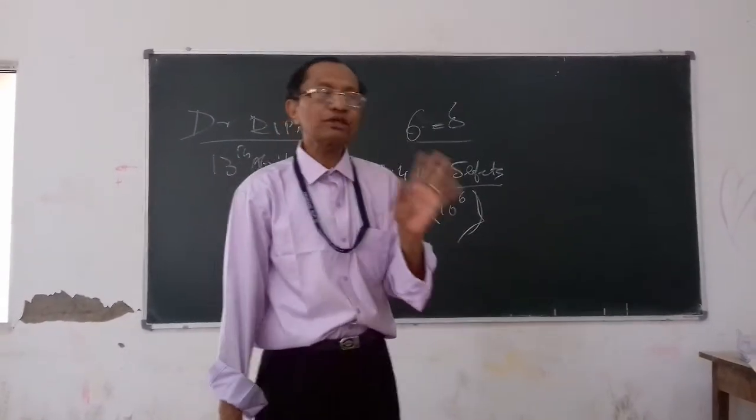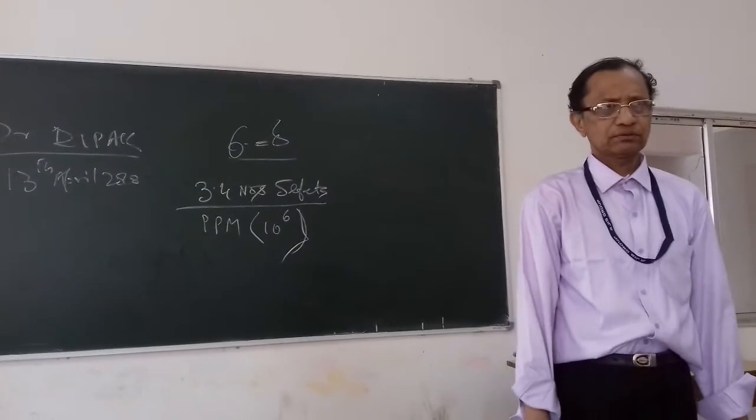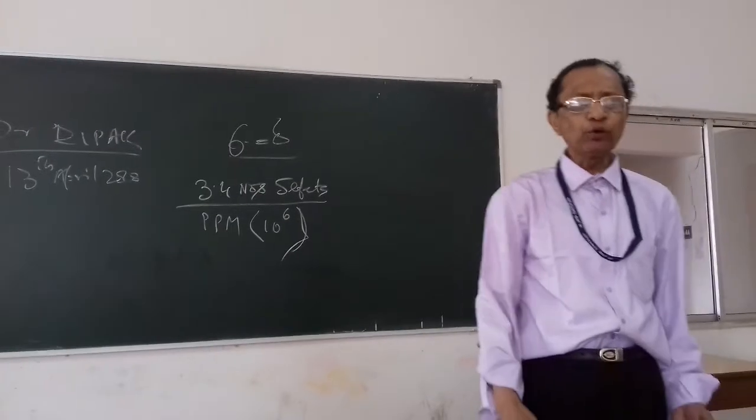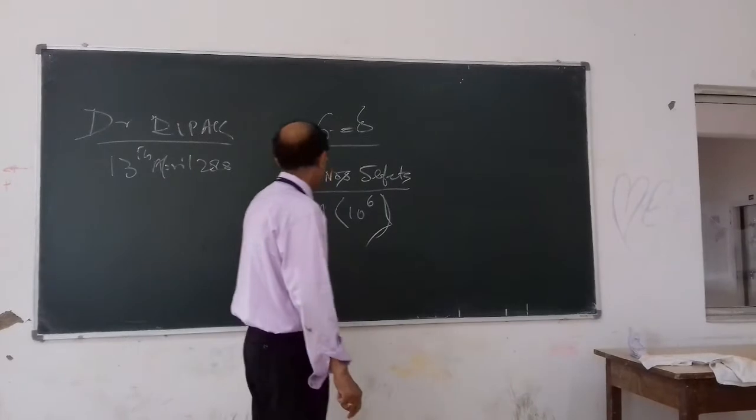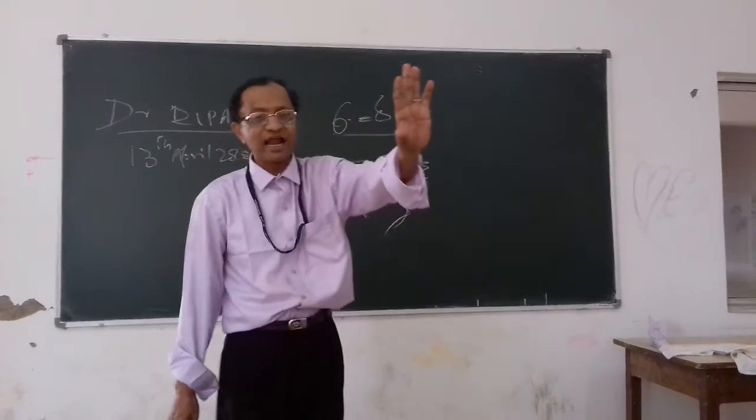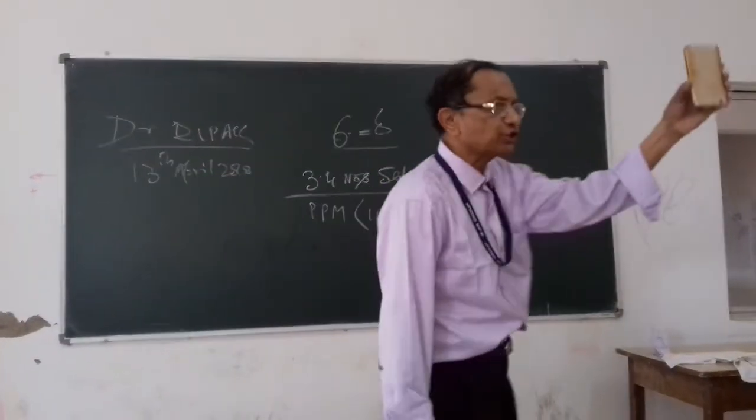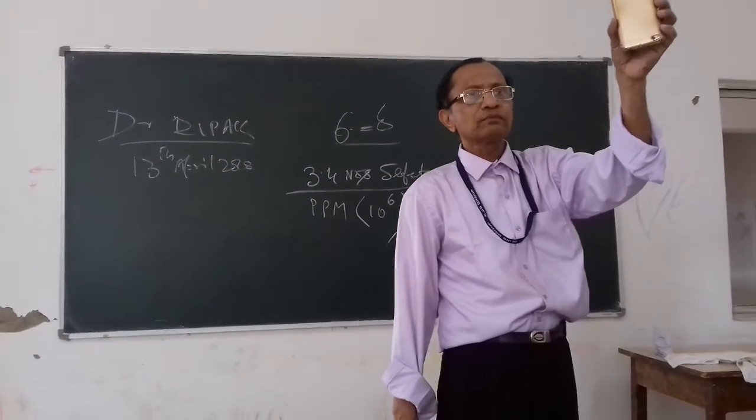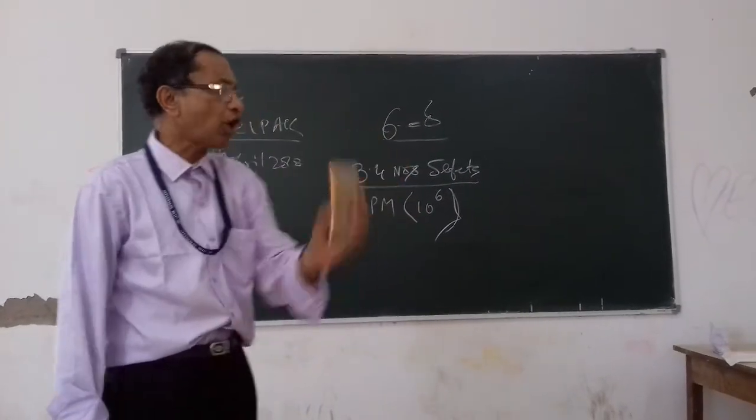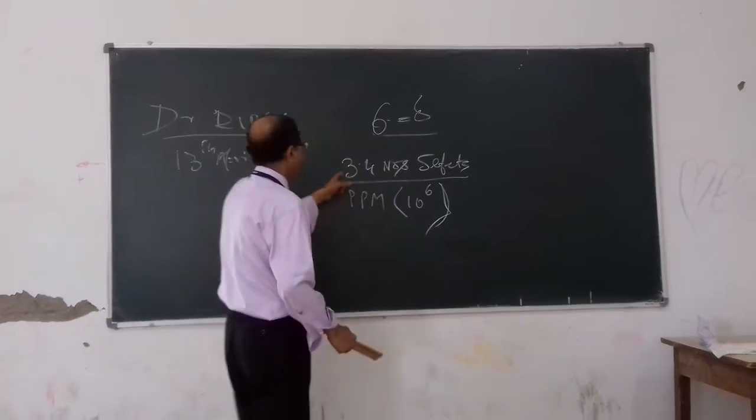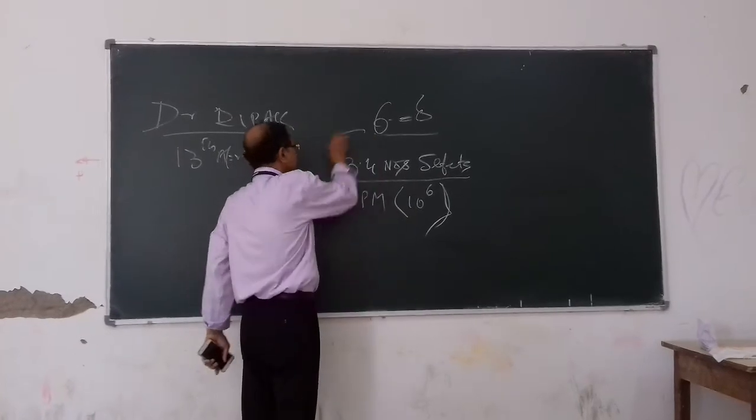3.4 numbers of defect is allowed. Means that, I will give you an example. If you produce 10 lakh products, only 3.4 numbers of defect is allowed, which is known as Six Sigma.